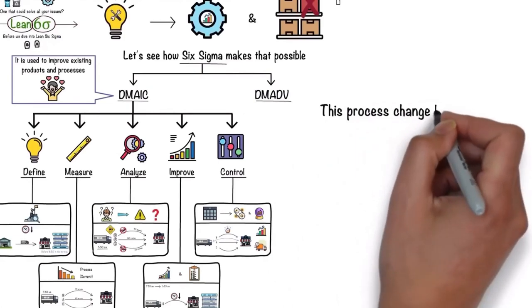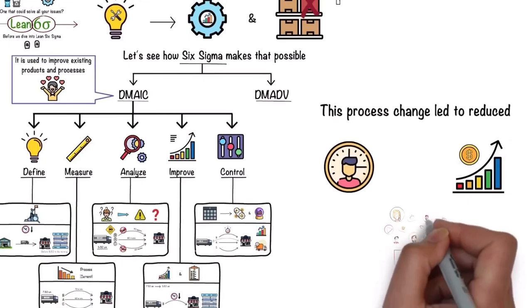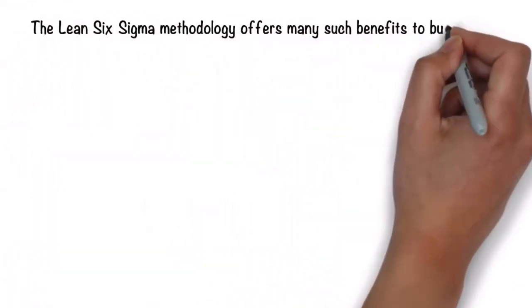This process change led to reduced man hours and cost, enhanced sales and customer retention. The Lean Six Sigma methodology offers many such benefits to businesses. Let's take a look at some of them.